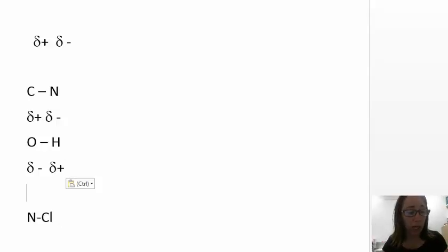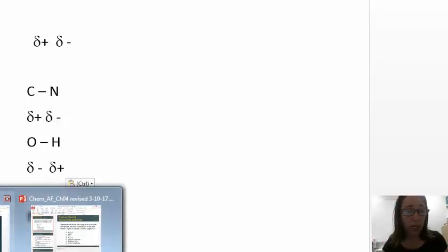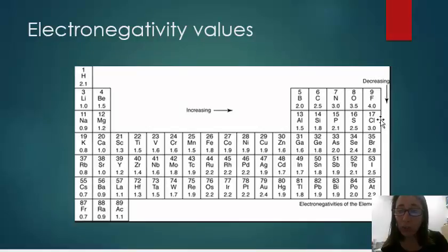All right, now let's look at nitrogen and chlorine. So if we look at nitrogen and chlorine, nitrogen is 3, chlorine is 3. They have the same electronegativity. So their electronegativity difference is less than 0.4, so this is going to be considered nonpolar, and the bonding electrons are going to be equally shared between both atoms.